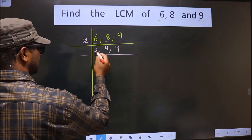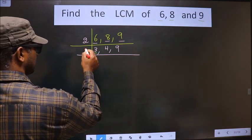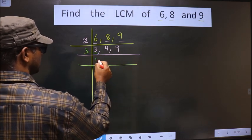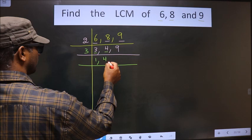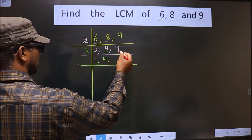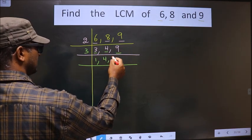Now here we have 3. 3 is a prime number so you take 3 here. 3 wants 3. 4 is not divisible by 3 so you write down 4 as it is. When do we get 9 in 3 table? 3, 3 is 9.